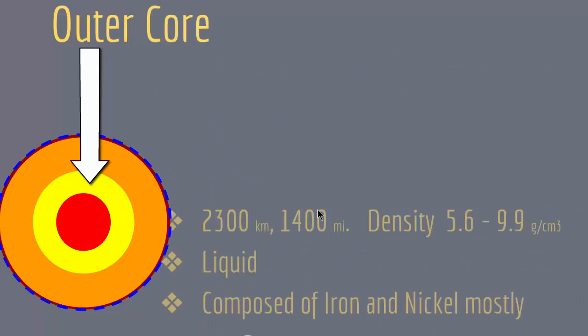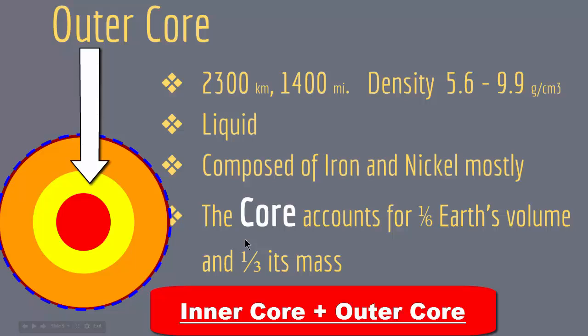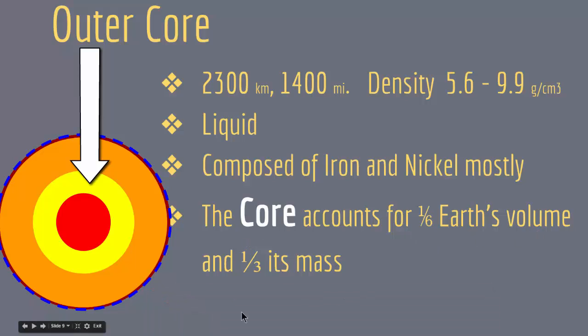After the mantle comes the outer core, which is about 2,300 kilometers thick, with a density of about 5.6 to 9.9 grams per centimeter cube. The material in the outer core is liquid — so far we had the crust as solid, the mantle in a plastic state, and now the outer core is liquid. It is composed mostly of iron and nickel. The core as a whole accounts for one-sixth of Earth's volume and one-third of its mass, due to the high density of the iron and nickel it contains.